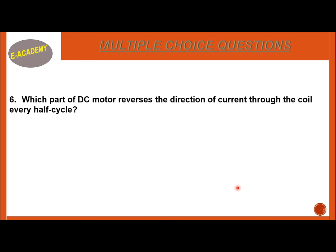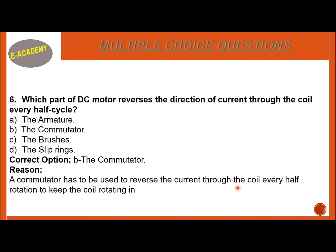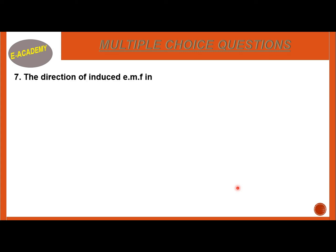Question 6: Which part of a DC Motor reverses the direction of current through the coil every half cycle? A. The Armature. B. The Commutator. C. The Brushes. D. The Slip Rings. The correct option is B — the Commutator. A commutator is used to reverse the direction of current through the coil every half rotation to keep the coil rotating in the same direction.